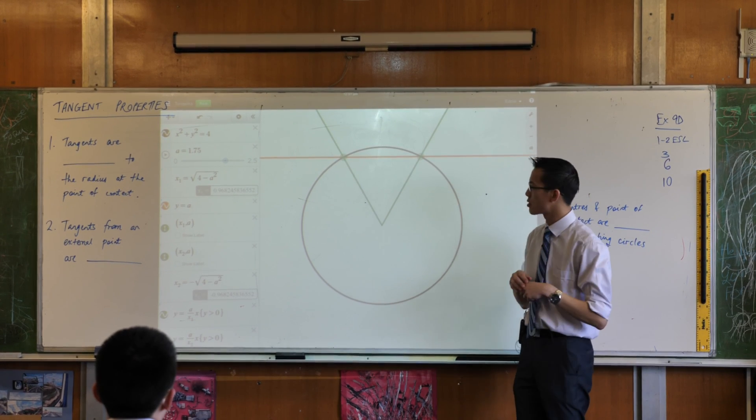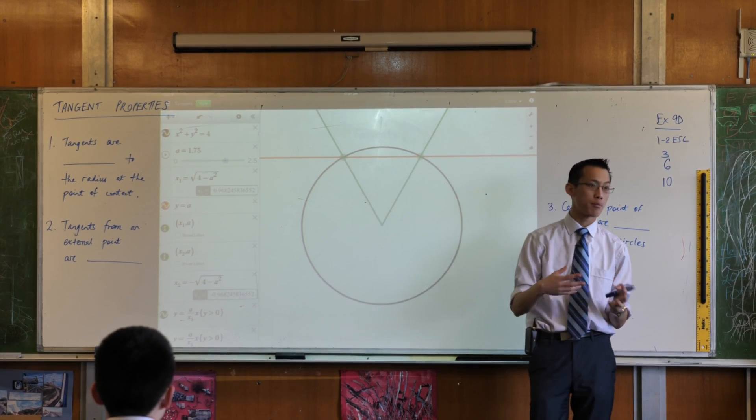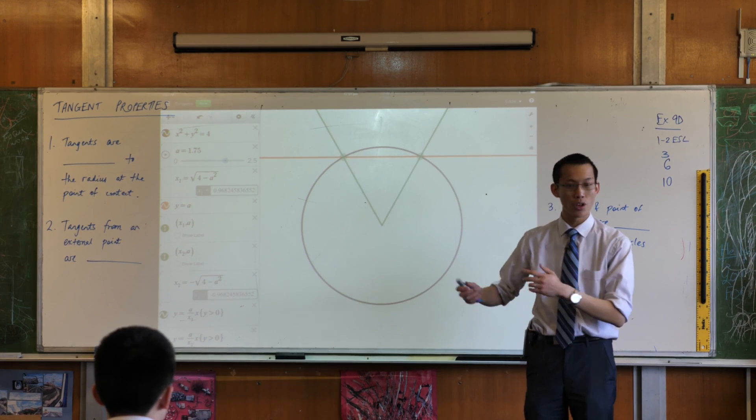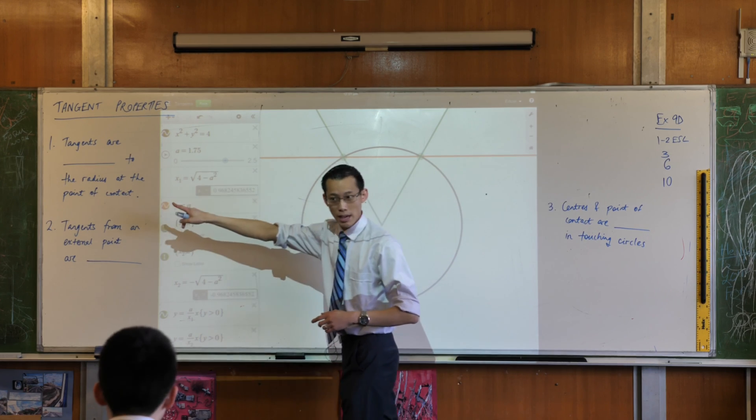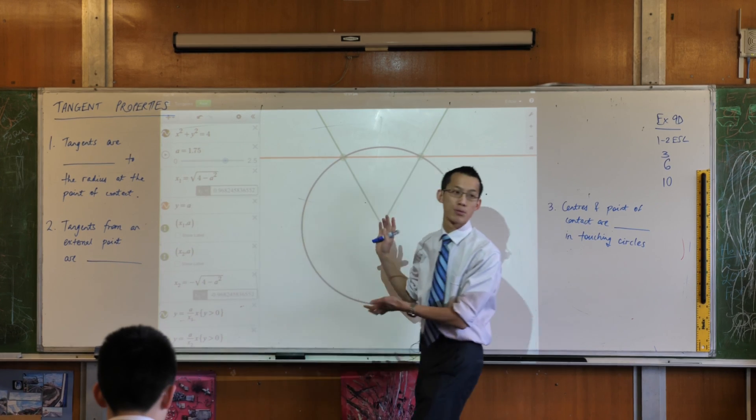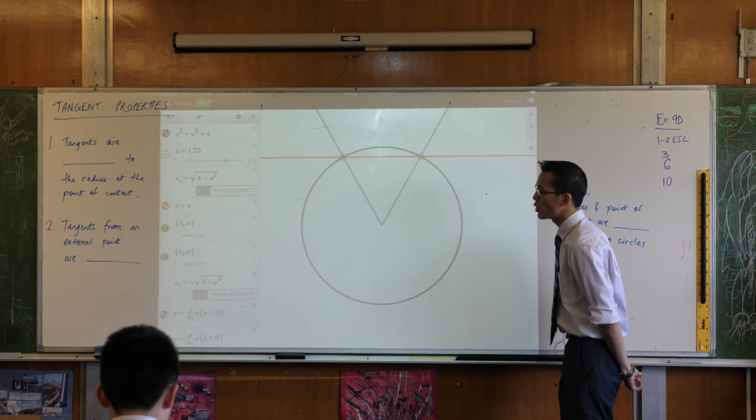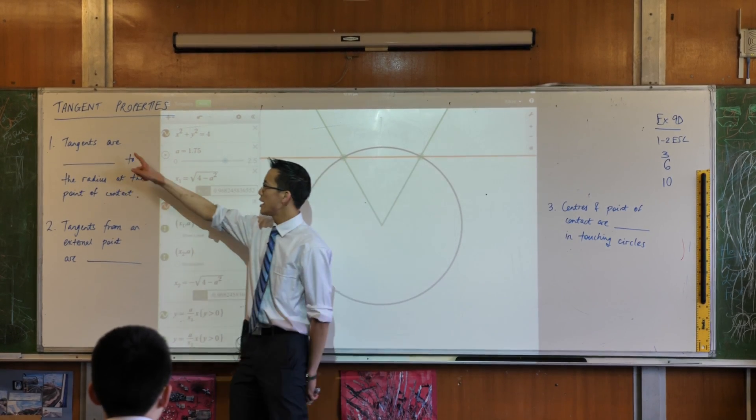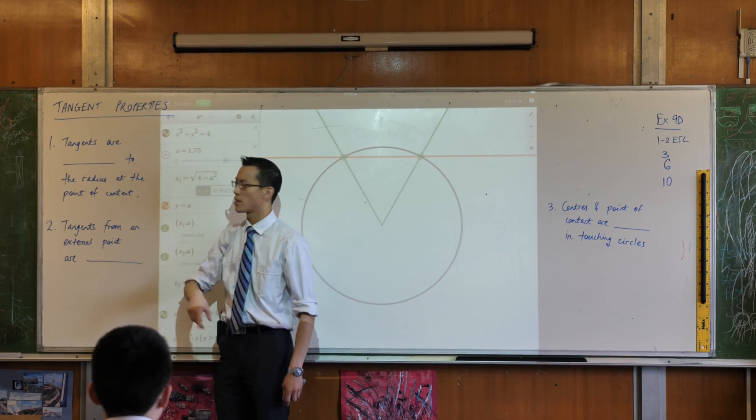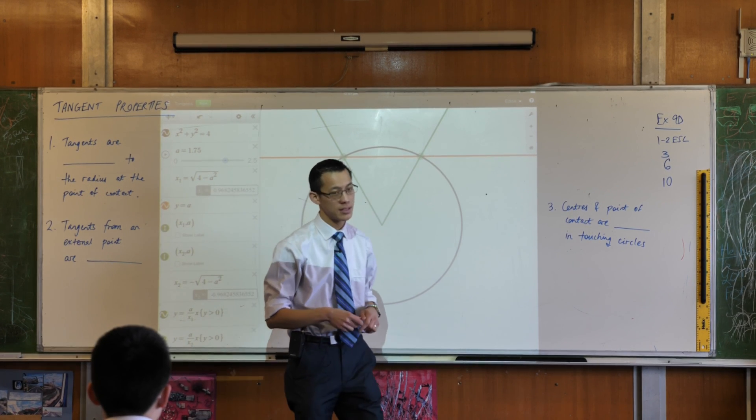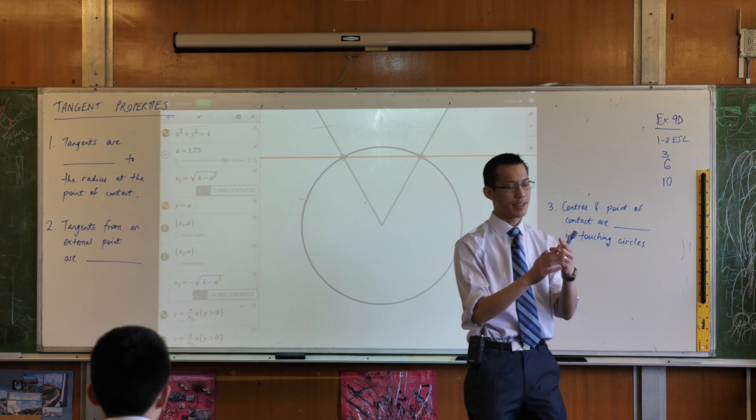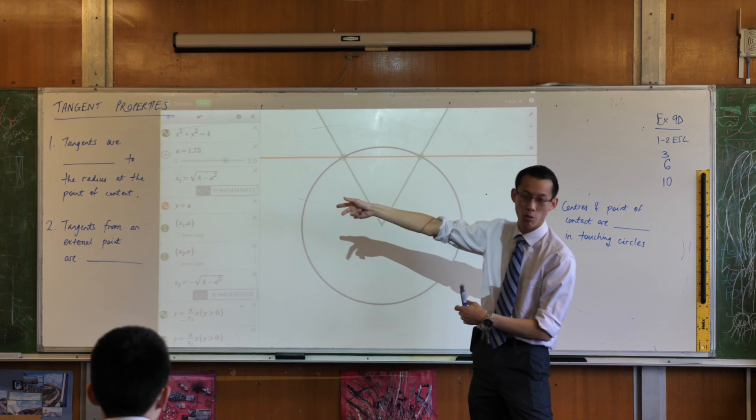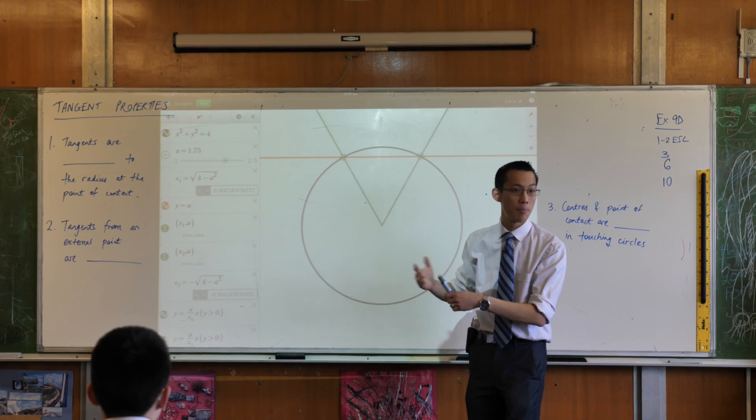So for starters, we're going to prove these very briefly but in order to know what we're proving, well we should draw these things and then we'll know what this property is and then we can set out to actually prove it deductively. So have a look at the first one. Tangents or a tangent is something to the radius at the point of contact. Alright, what that means is we all know what a tangent is. A tangent just touches, hence the name, just touches a circle at a single point and we call that unimaginatively the point of contact.